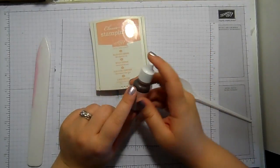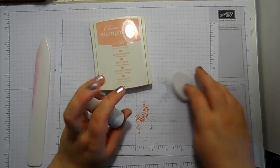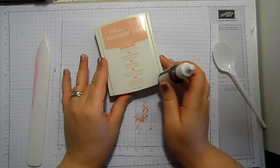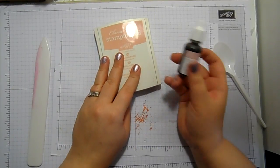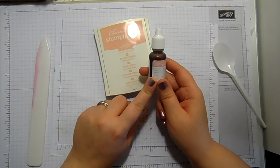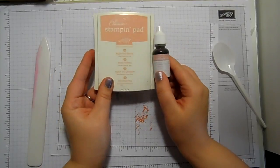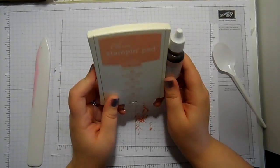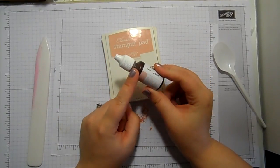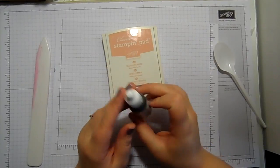Now all of our Stampin' Up ink pads have a coordinating re-inker available along with other coordinating products, so my suggestion is when you buy the ink pad, grab the re-inker at the same time. These cost £3.25 and your ink pads are £6, so as a bundle you're spending £9.25 on ink that's going to last you a really long time because these bottles are massive and we use re-inkers for much more than just re-inking our ink pads.